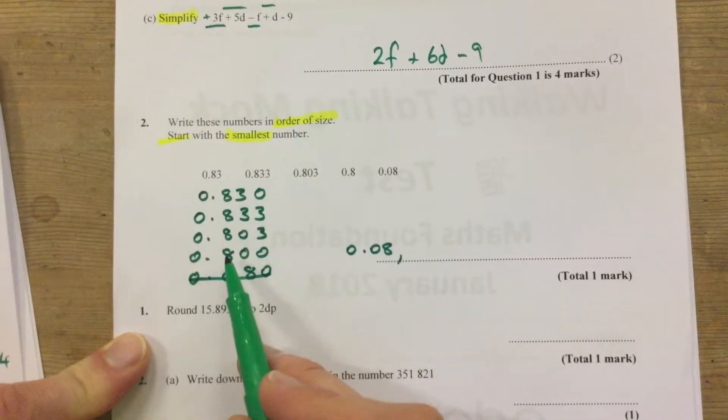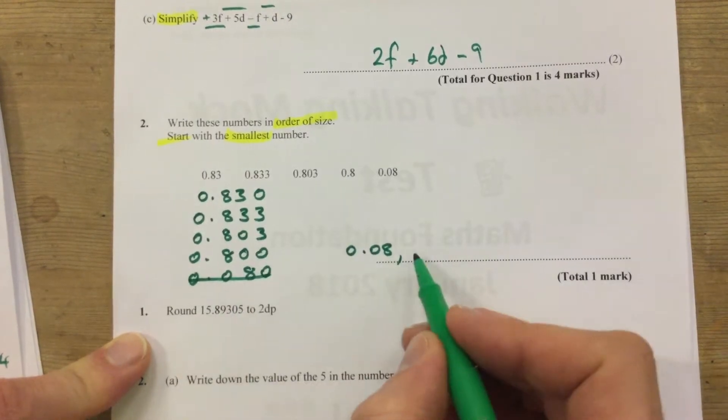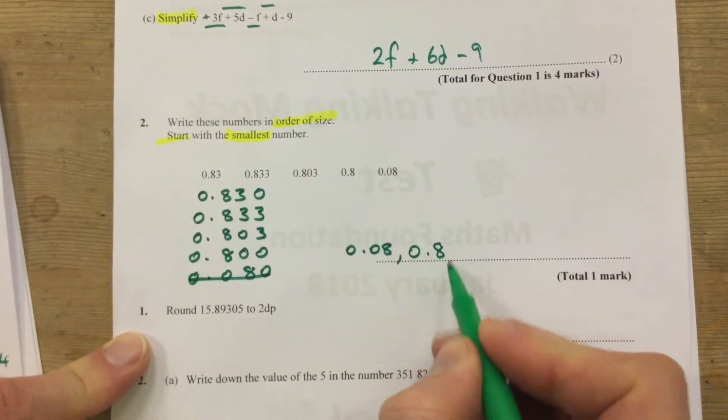There's 8 in all the tenths columns there, there's nothing there, and there's nothing in the thousandths, so it'll be 0.8 next.